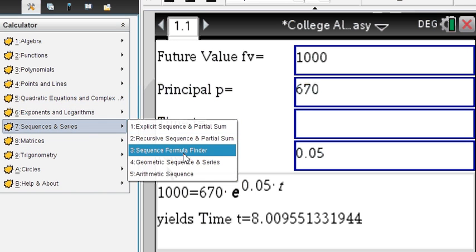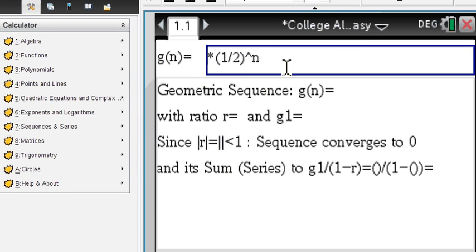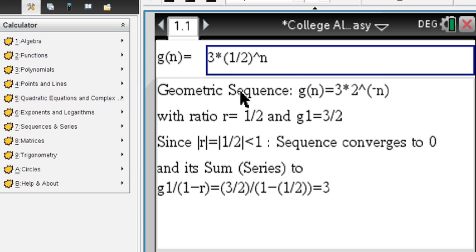Sequences and series. Say we are dealing with geometric sequences. So you enter the explicit formula for a geometric sequence. And the system determines the ratio is a half, the first term is 3 over 2.